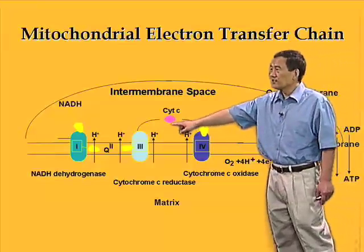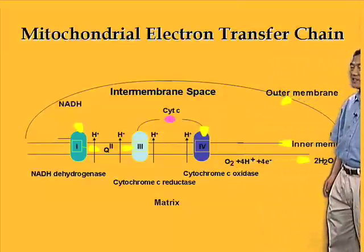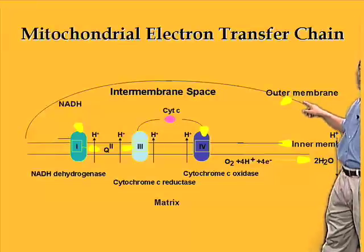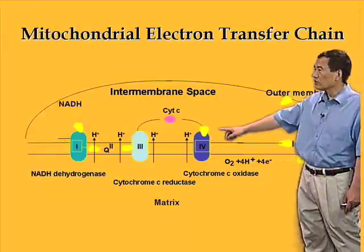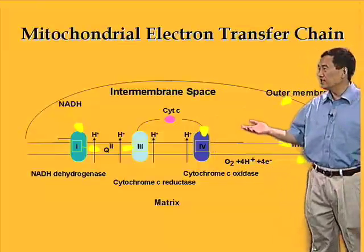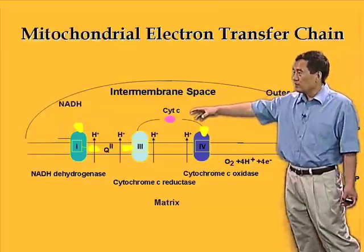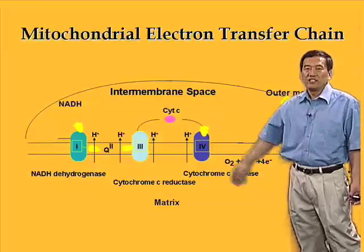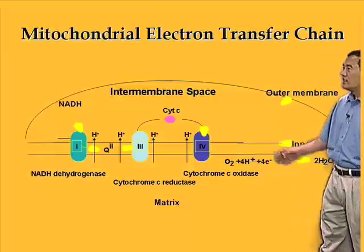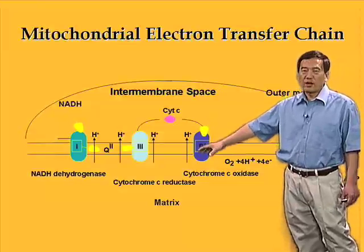Cytochrome C is the only water-soluble component of the electron transfer chain, and it is trapped inside the mitochondria by the outer membrane. Although cytochrome C is encoded by the nucleus, the pro-protein is made inside the cell, but the heme ligand is only added inside the mitochondria — where the heme resides — and only when the heme is added is the protein folded properly, trapping it in the mitochondria.